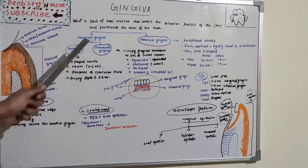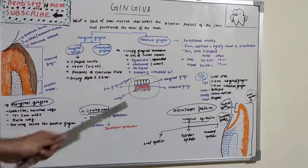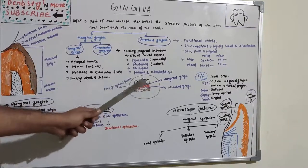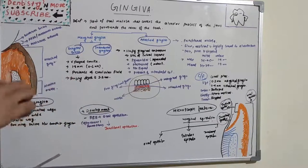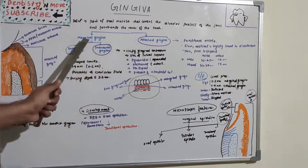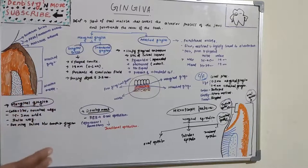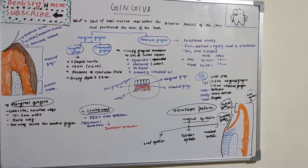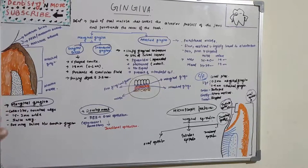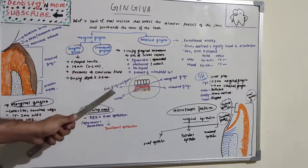It has basically two parts: marginal Gingiva and attached Gingiva. Marginal Gingiva is a free Gingiva which is not attached to the teeth. You can see it just around the teeth, forming a small groove or sulcus around the teeth. It is also known as free Gingiva because it is not attached — it is free to move or flexible in nature.